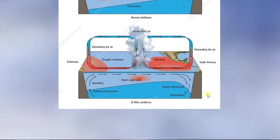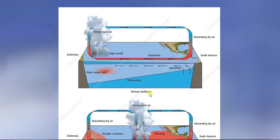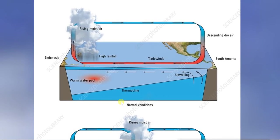Let's go ahead and draw the diagram of El Niño conditions. You should probably also sketch in what normal conditions look like so you know the comparison. Sketch this in and label it 'normal conditions.' Pause until you get that done, then diagram El Niño conditions.